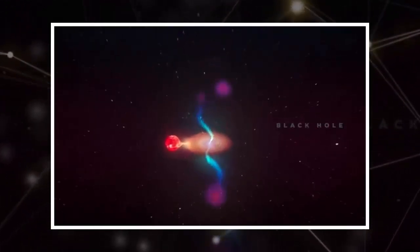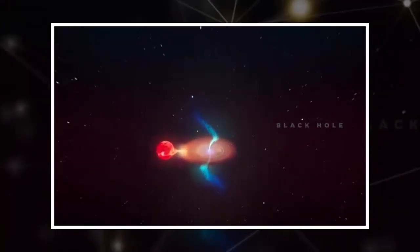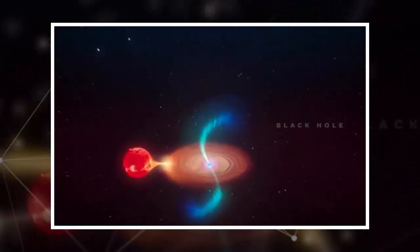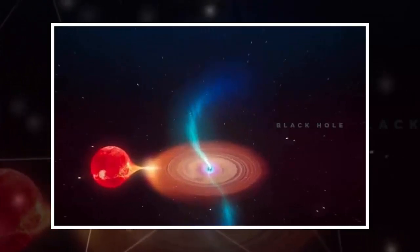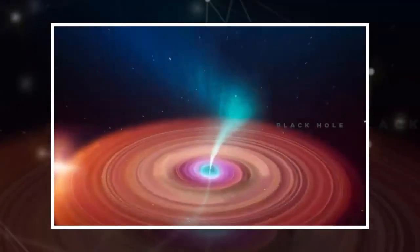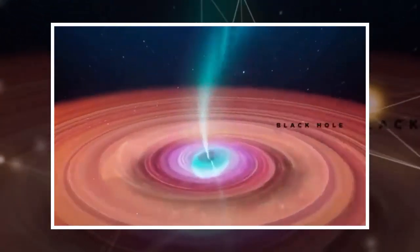A black hole almost 8,000 light years away from Earth has caught the eye of astronomers due to its peculiar, wobbly nature. Called V404 Cygni, the black hole was spotted ejecting high-speed clouds of plasma in a manner that's never been seen before by scientists.